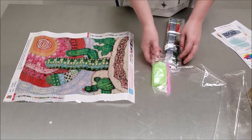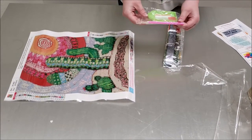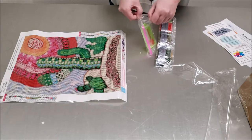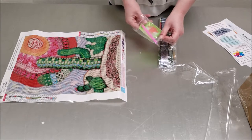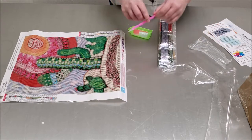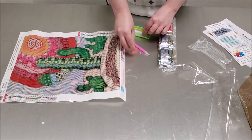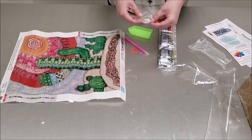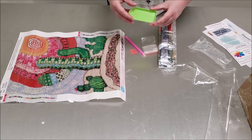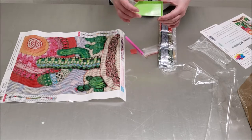So while that gets flat, we have our accessories and our tools. So this is our little pen, this is some glue, some extra baggies, and our little plate they call it.